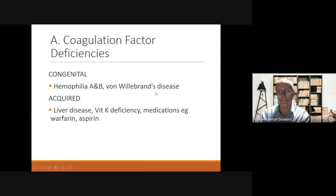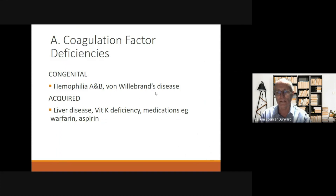Coagulation factor deficiencies can be divided into two groups. Haemophilia A, B, and von Willebrand's disease are congenital disorders, whereas liver disease, vitamin K deficiency, and medications such as warfarin and aspirin are acquired.